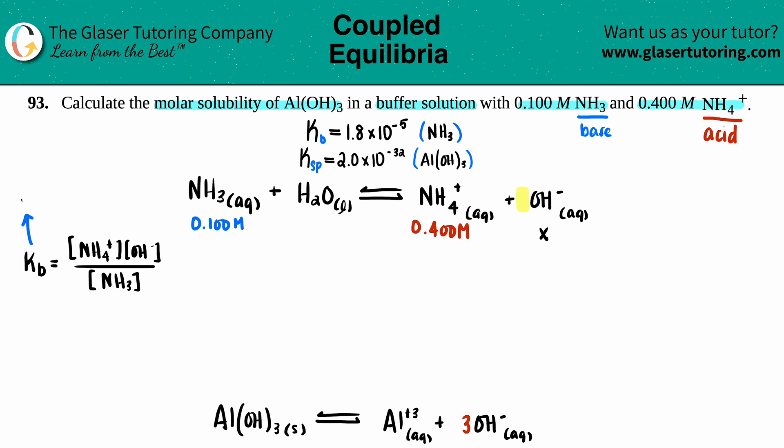Kb we know is 1.8 × 10⁻⁵. We said that the NH₄⁺ was the 0.400, this was the 0.100, and this is going to be just x. So let's plug it in: 1.8 × 10⁻⁵ equals 0.400 times x over 0.100.